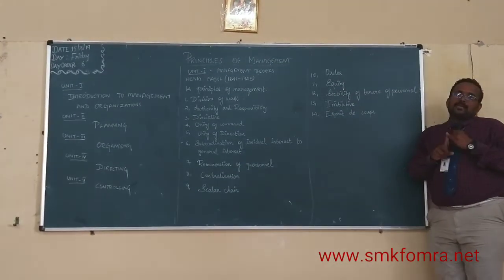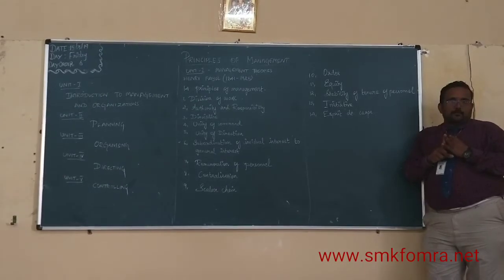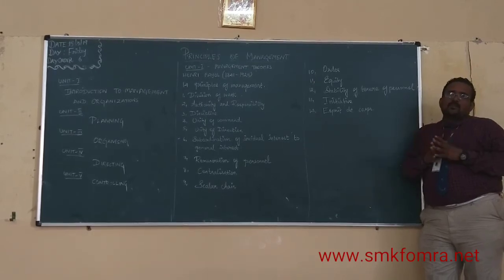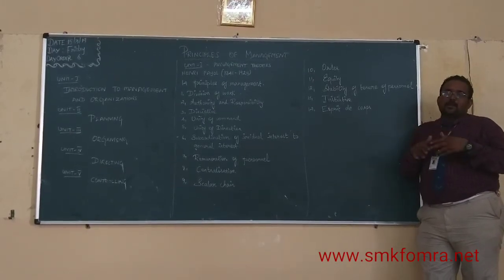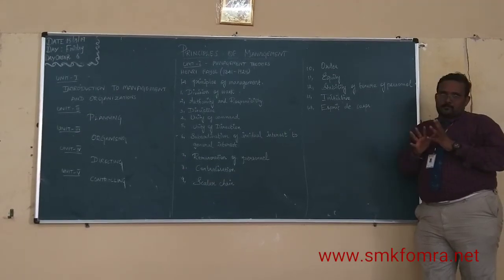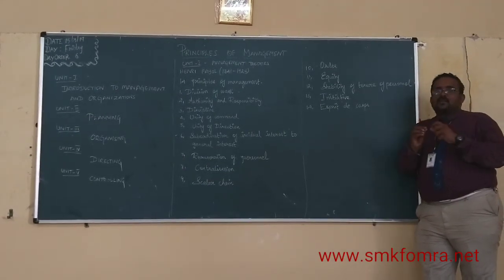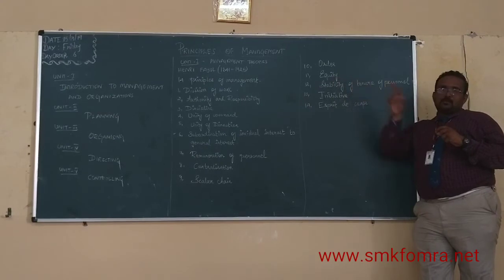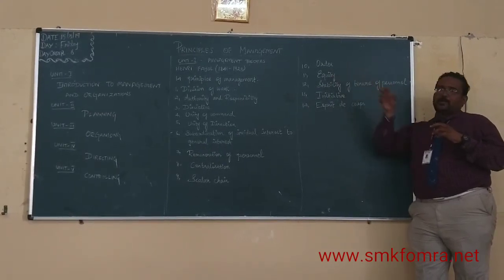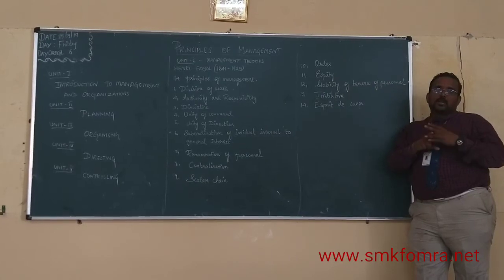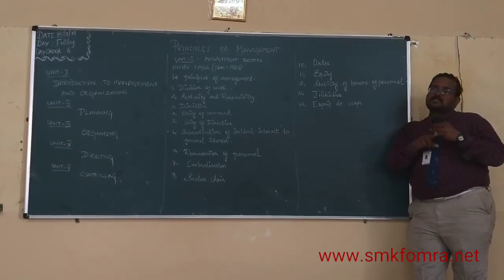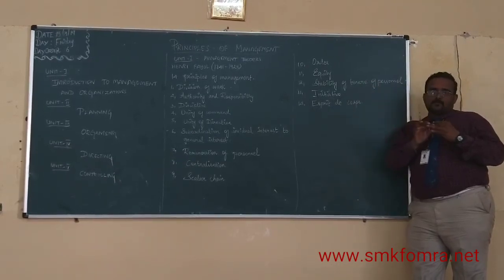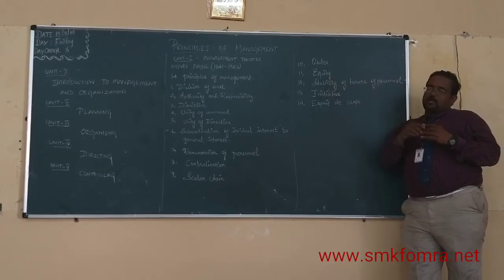The ninth principle is order. There are two types of order: material order and social order. Material order means things should be in the right place — everything in the workplace should be in its proper location. Social order means the right person should be in the right position. That is social order.